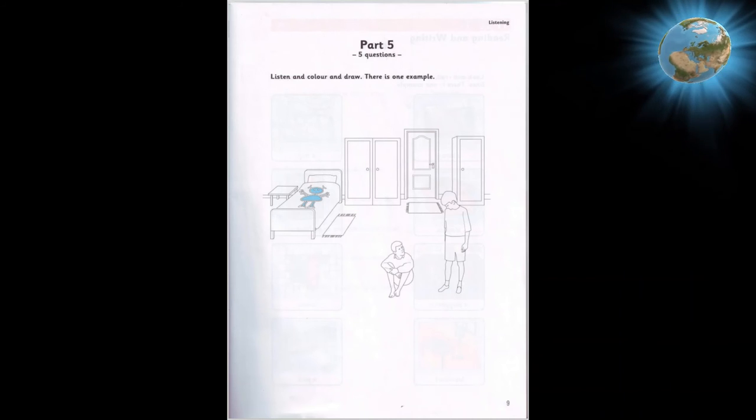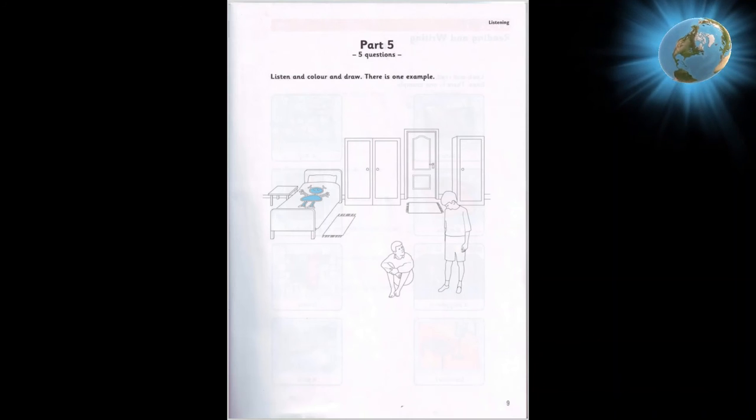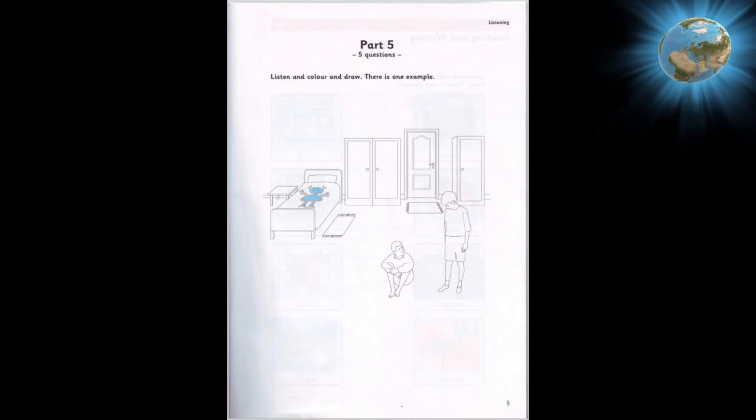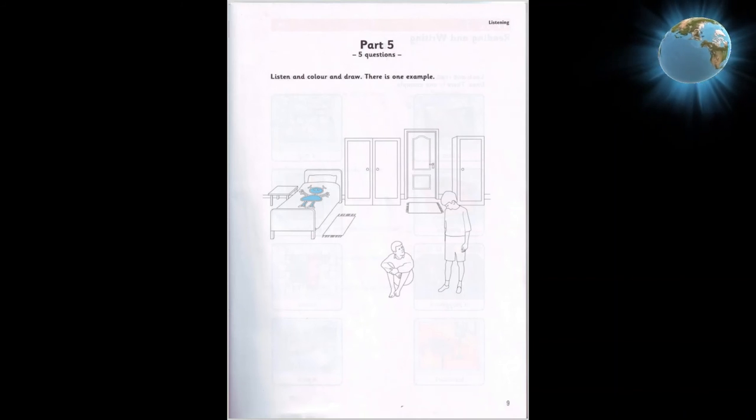Now listen to part five again. One. There are two cupboards in the room. Can you see them? Yes. A big one and a smaller one. I want you to colour them. What colour? Colour the big cupboard green and the smaller one yellow. OK.